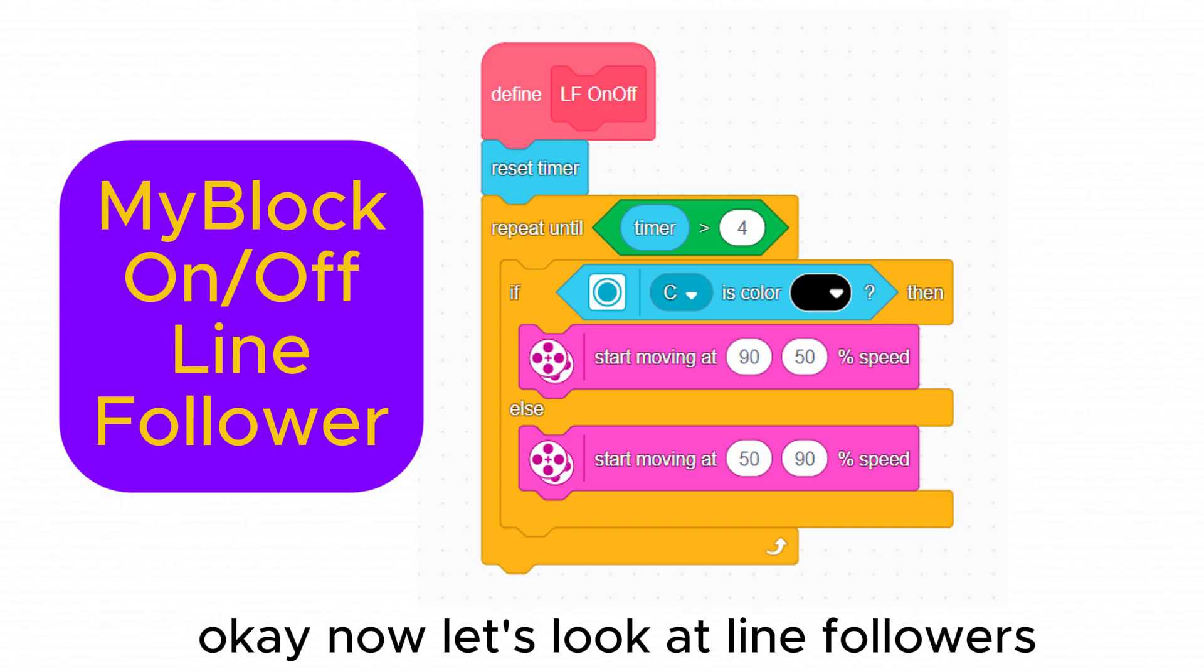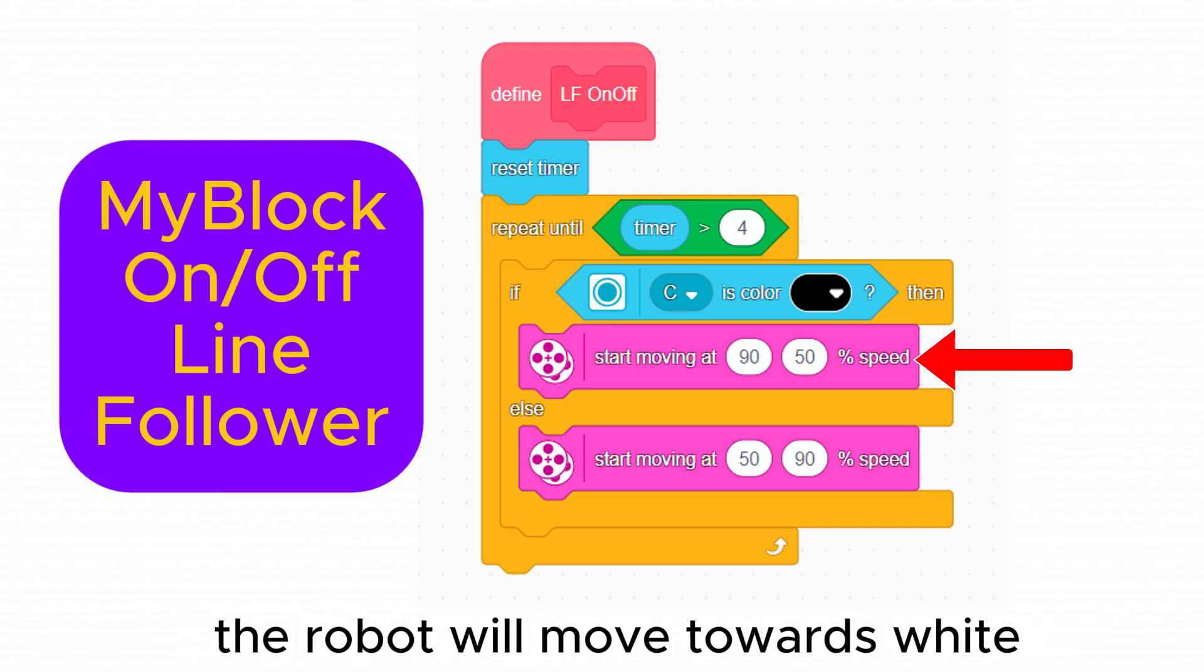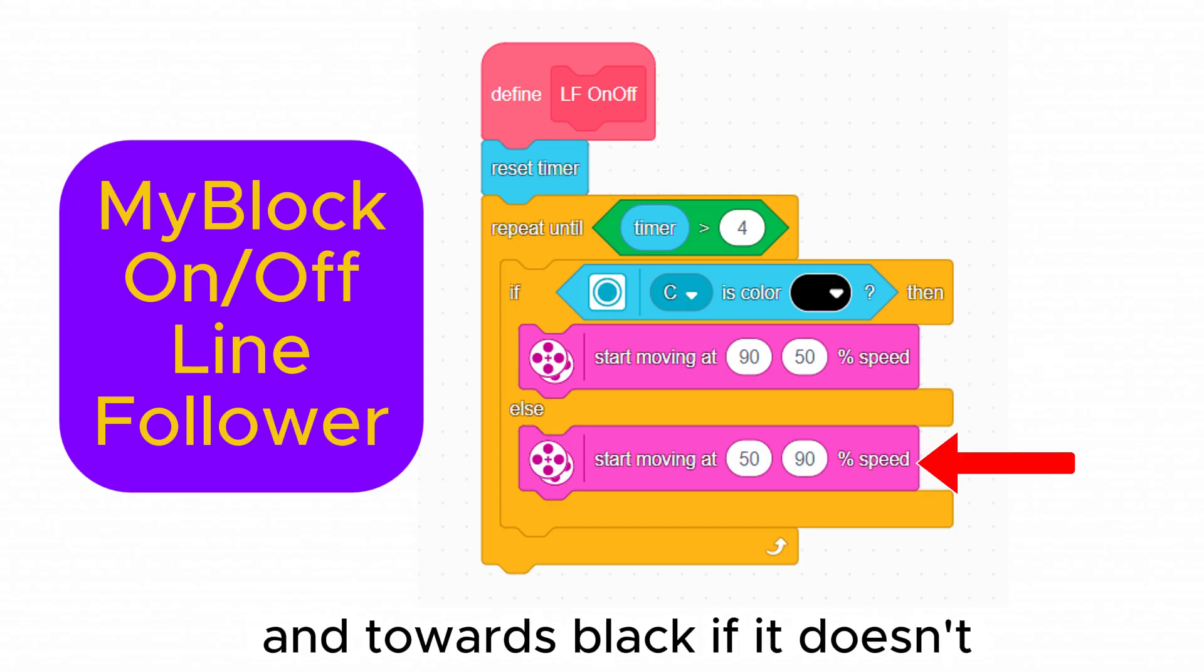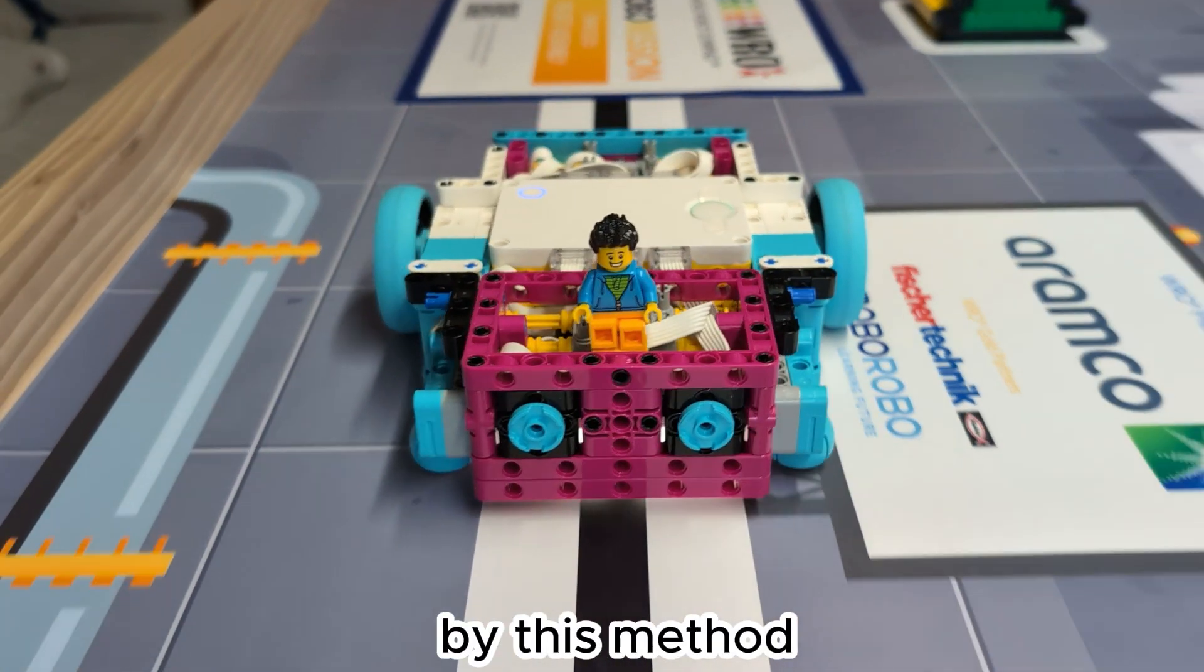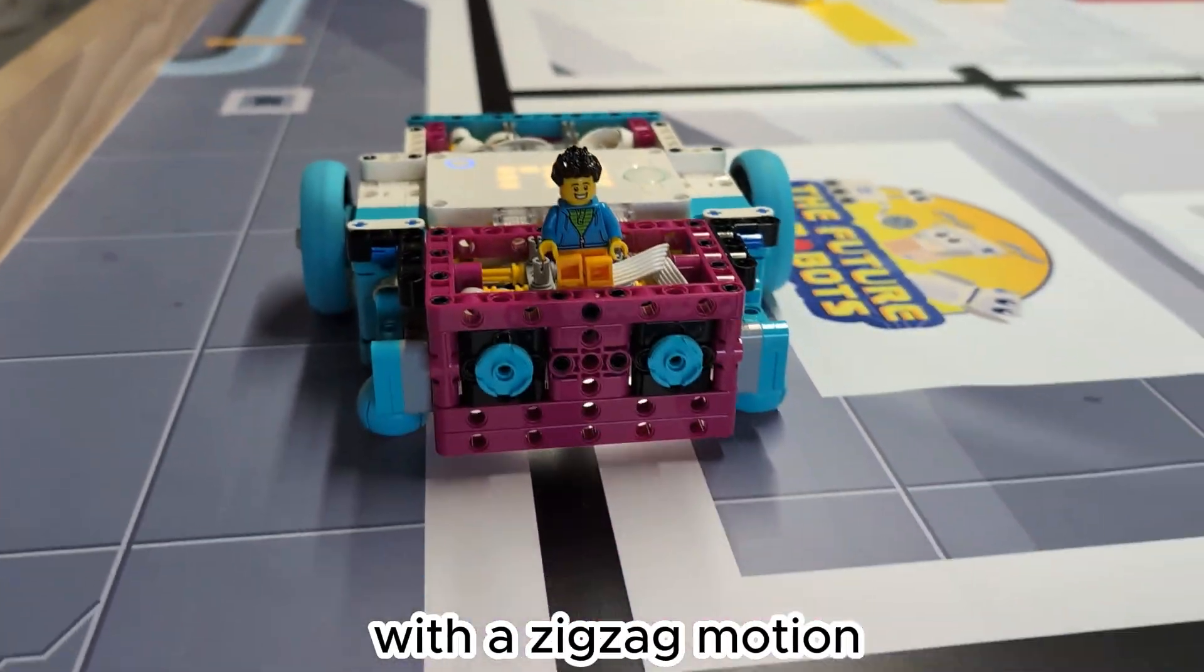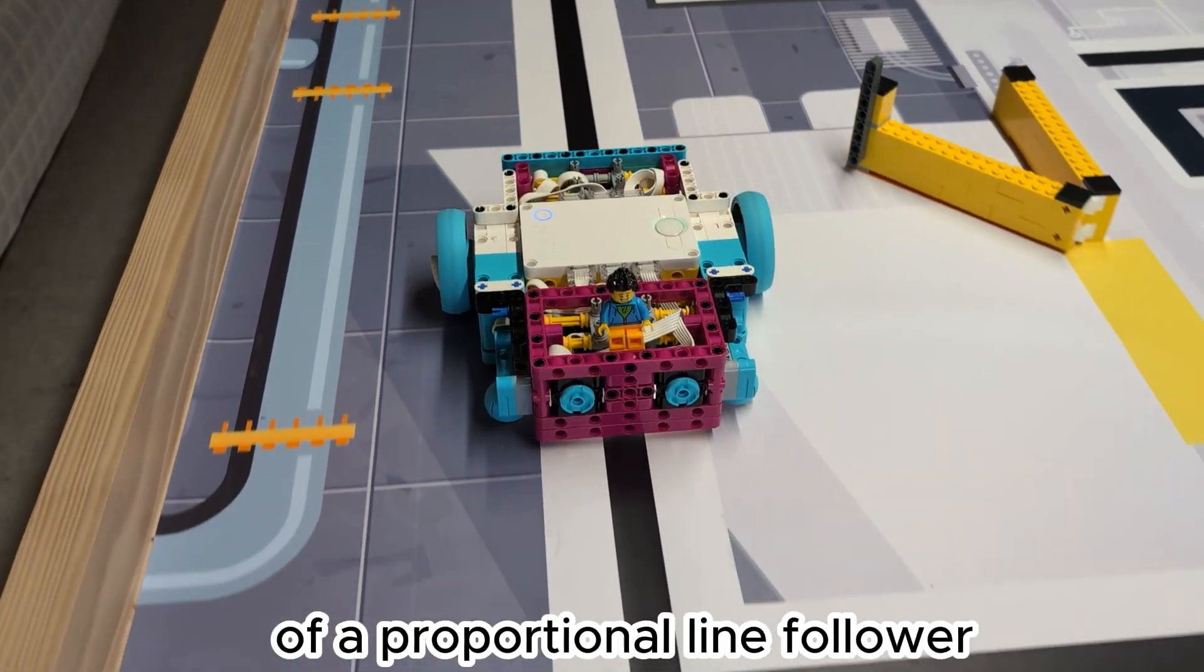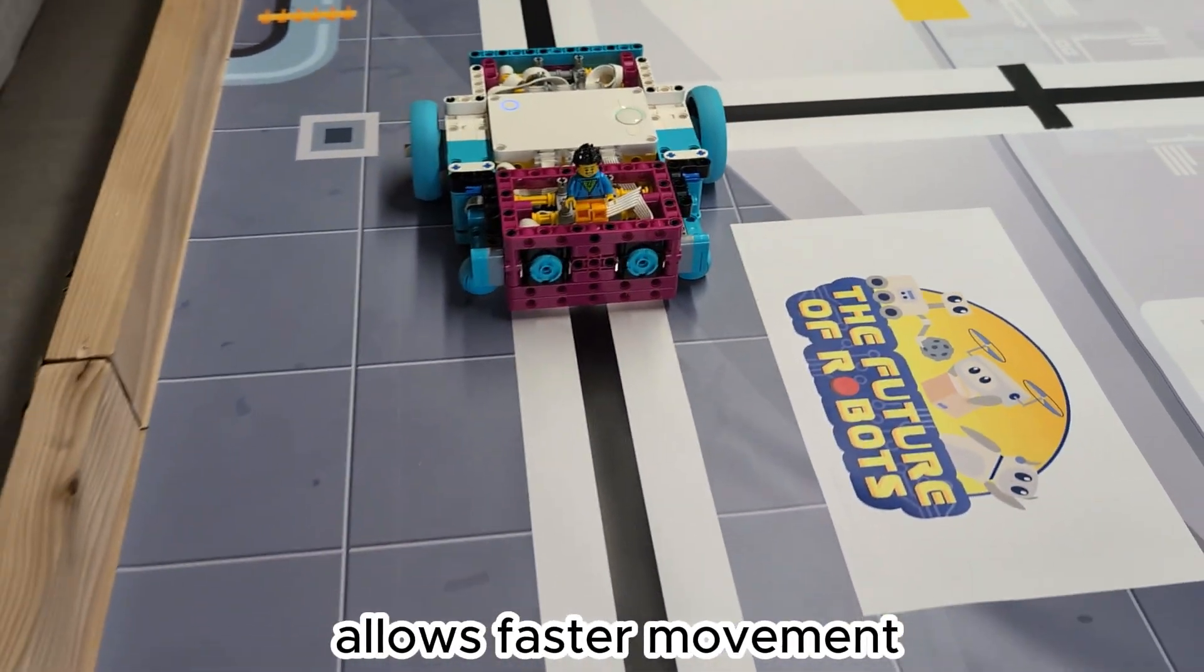Okay now let's look at line followers. The simplest type uses on-off control. The robot will move towards white if the sensor sees the black line and towards black if it doesn't. By this method it will follow the border between black and white with a zigzag motion. It actually works quite well but the smooth motion of a proportional line follower allows faster movement.